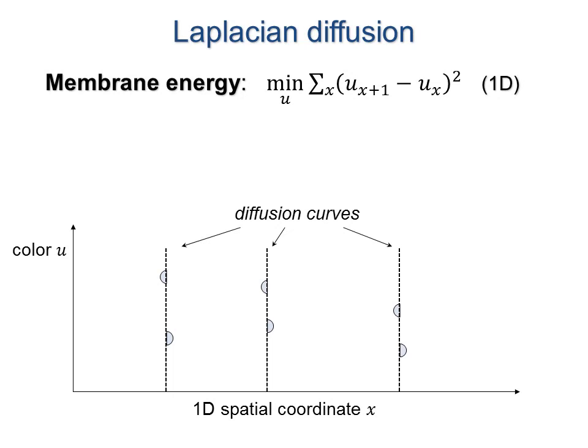Diffusion minimizes squared first derivatives. In 1D, the solution is piecewise linear. A diffusion curve with two identical colors leads to a derivative discontinuity. At an outermost constraint, the function doesn't extrapolate.